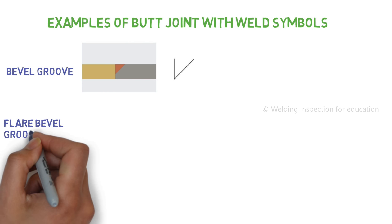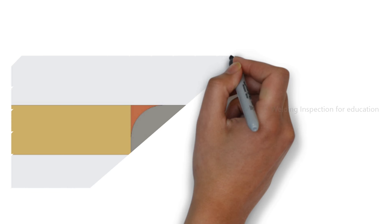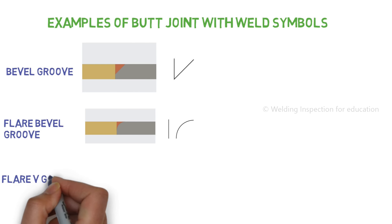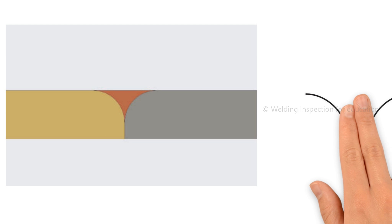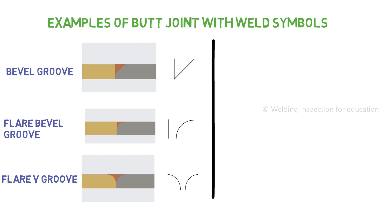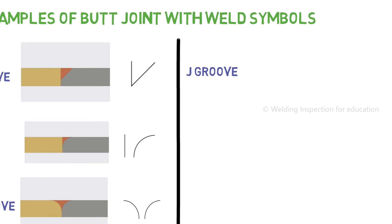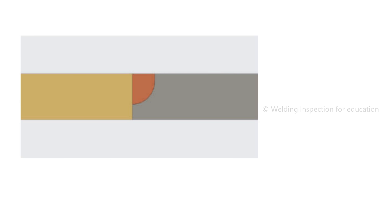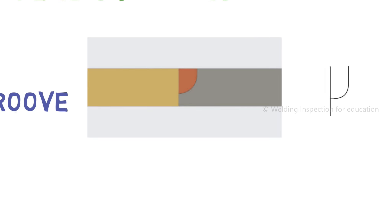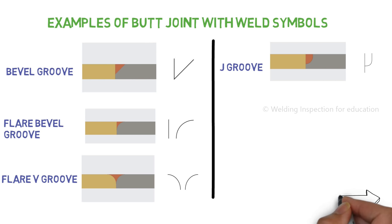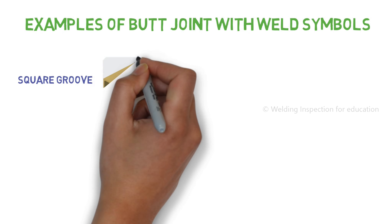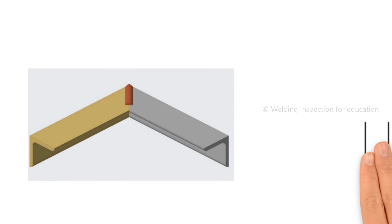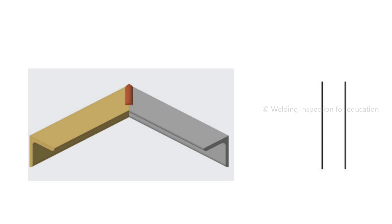Second, flare bevel groove butt joint: one surface has a radius and the other is flat. Third, flare V groove butt joint: both surfaces are prepared and both radiuses make a flare V groove connection. Fourth, J groove butt joint: one surface is flat and the other has a radius, opposite to the flare bevel groove. Fifth, square groove butt joint: both surfaces are flat and they are touching or not touching each other.